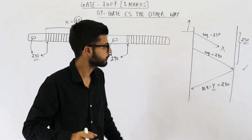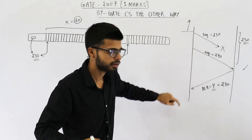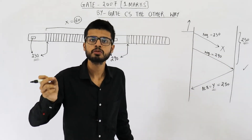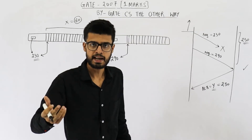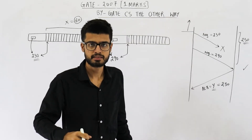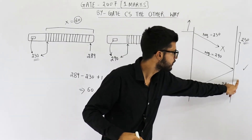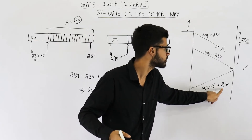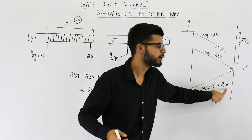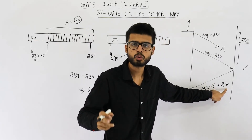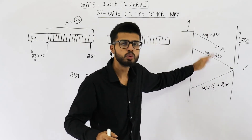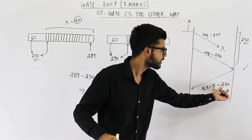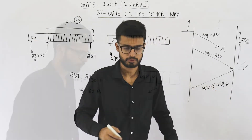You need to know that the acknowledgement number sent by the receiver always specifies the data that the receiver is expecting. Now the receiver wants this data, so it will say the acknowledgement number is 230. Saying acknowledgement number equals 230 means that before 230 it has received all the bytes, but currently it needs data starting from 230.